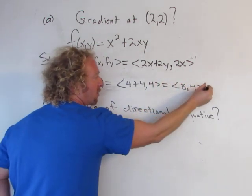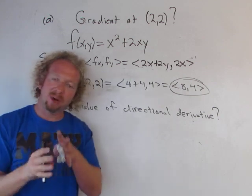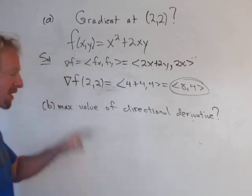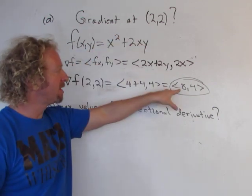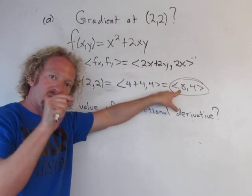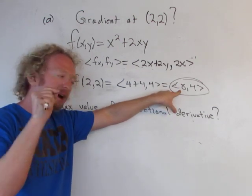So that is the gradient vector, right? It's a vector that points in the direction of maximum increase. So at (2,2), this is the vector that points in the direction of maximum increase of this function.